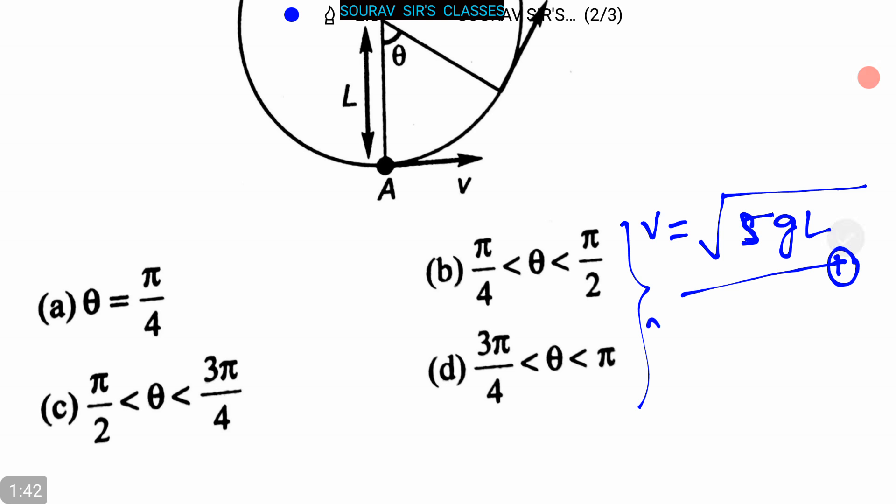Now we can also write v by 2 whole square is equal to v square minus 2gh. This is our second equation.